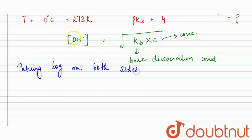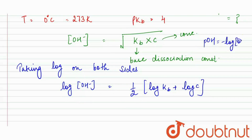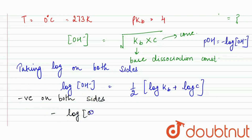Taking log on both sides: log of OH⁻ ion concentration is equal to one half of log KB plus log C, because multiplication in log comes as addition, and one half is for the square root. Since POH equals minus log of OH⁻ ion concentration, we take the negative on both sides: minus log of OH⁻ equals one half times minus log KB plus minus log C.